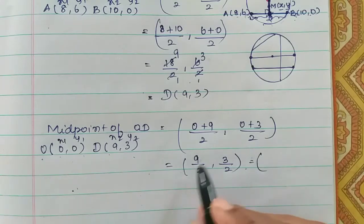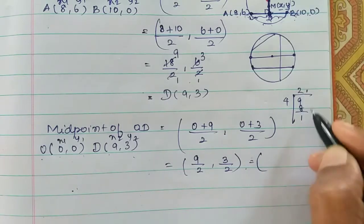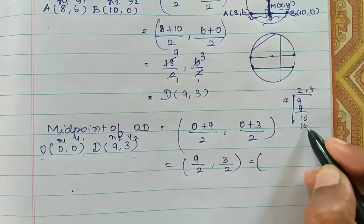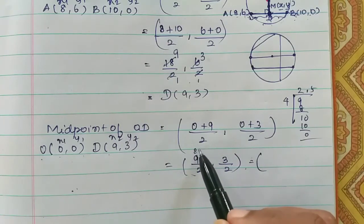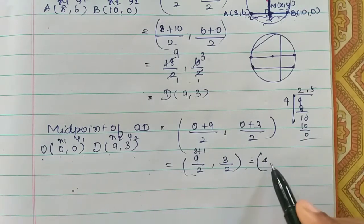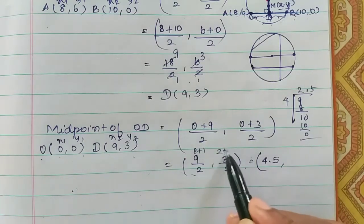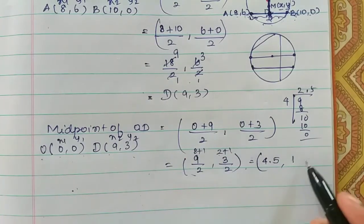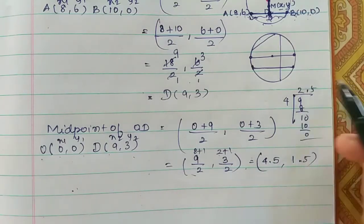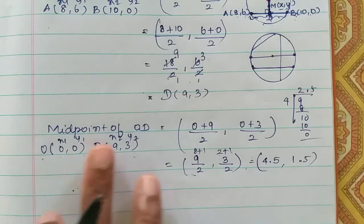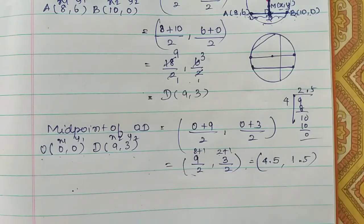So 9 divided by 2 gives 4.5, and 3 divided by 2 gives 1.5. Therefore, the coordinates of the midpoint of OD are (9/2, 3/2), which equals (4.5, 1.5). That's all.